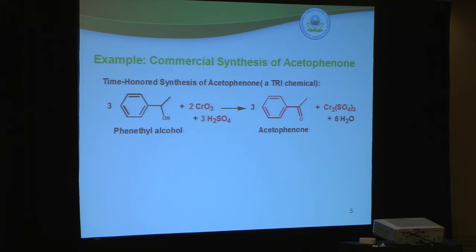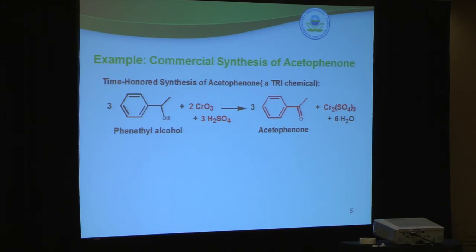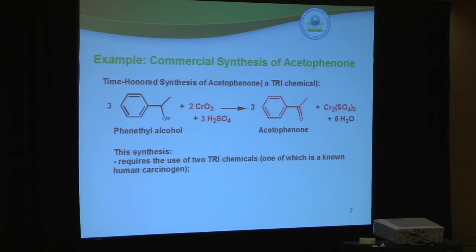You get your product, acetophenone, and then you get some waste — chromium sulfate. The chemicals shown in red on this slide are all on the TRI list of toxic chemicals, even acetophenone itself. So if a facility in the United States were manufacturing acetophenone using this synthesis, they would have to file TRI reports for chromium trioxide, for sulfuric acid, for acetophenone if they exceeded the manufacturing threshold, and also for the chromium sulfate waste. This synthesis requires the use of two TRI chemicals, one of which — chromium trioxide — is a known human carcinogen. It also generates chromium sulfate, which is also a known human carcinogen, in large quantities as waste.